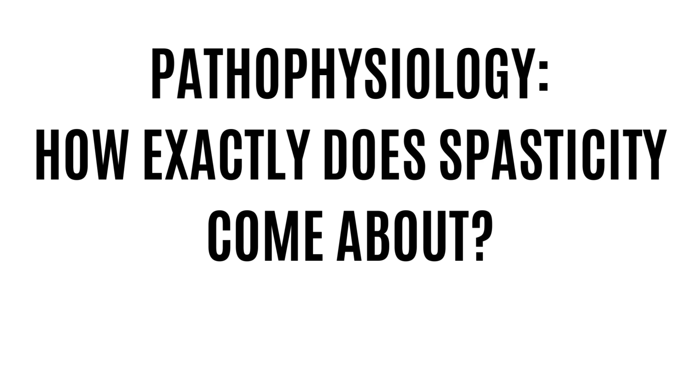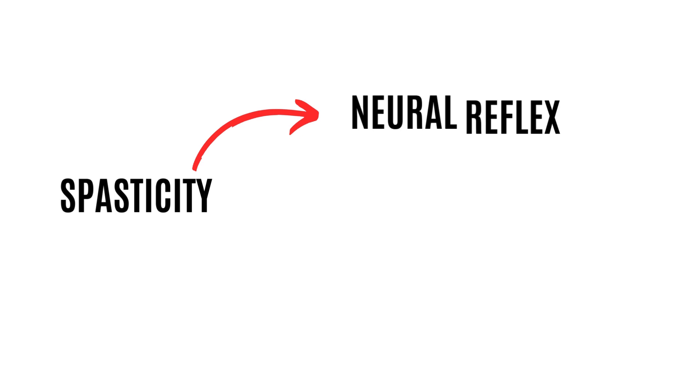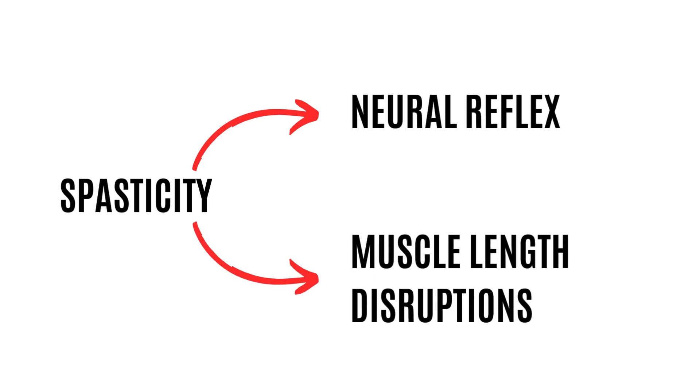Now coming on to the pathophysiology of spasticity — how exactly does spasticity occur? We can break down spasticity into two reasons why it happens. First is due to the neural reflex. Second is due to muscle length disruptions.